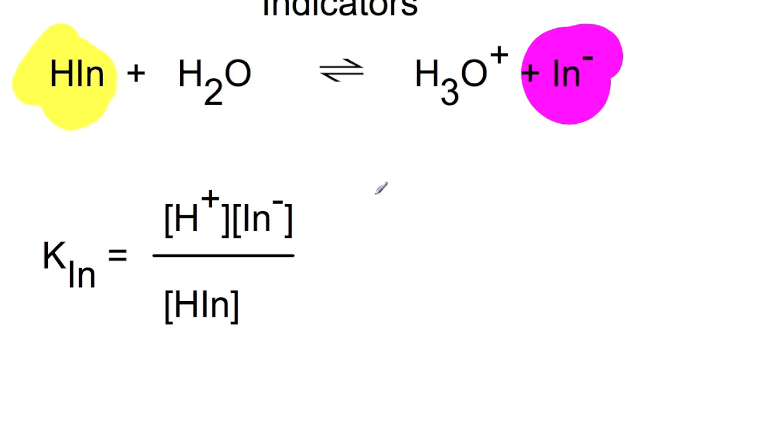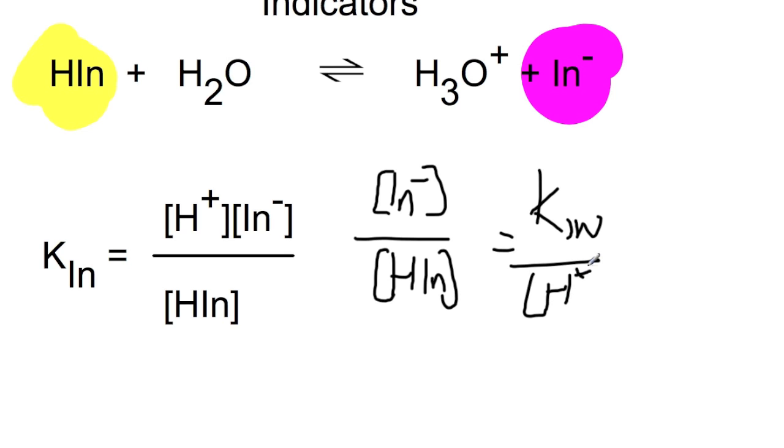This equation can be rearranged to find the pH at which we will see the color change. If we rearrange the equation to have concentration of IN- divided by concentration of HIN equals KIN divided by concentration of H+.